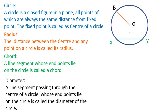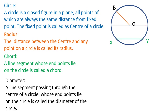Next we have diameter. A diameter is a line segment passing through the center whose endpoints lie on the circle. The line segment must pass through the center and its endpoints should lie on the circle. As you can see in this dark line segment, it passes through the center and its endpoints lie on the circle. Such a line segment is called a diameter.